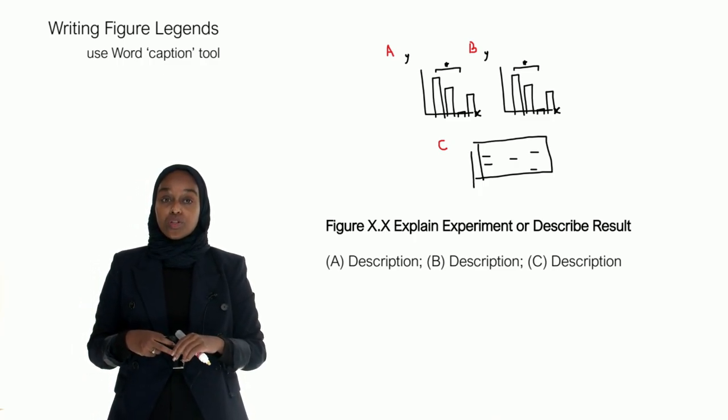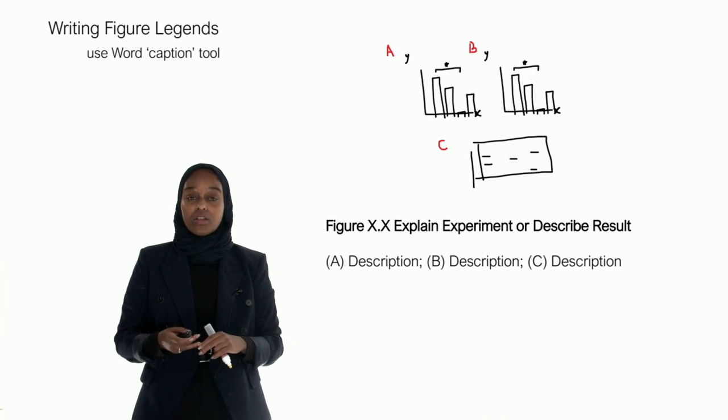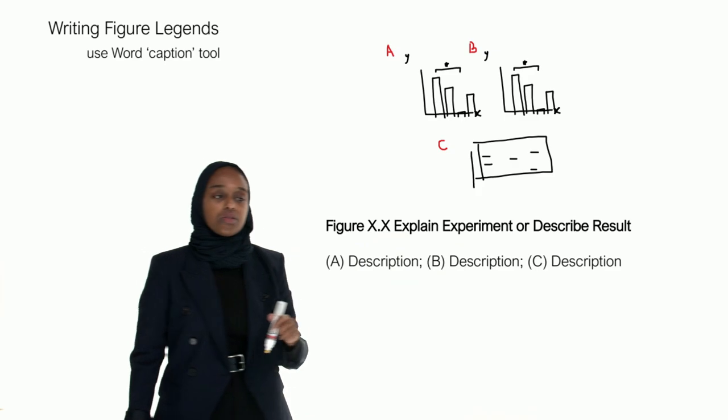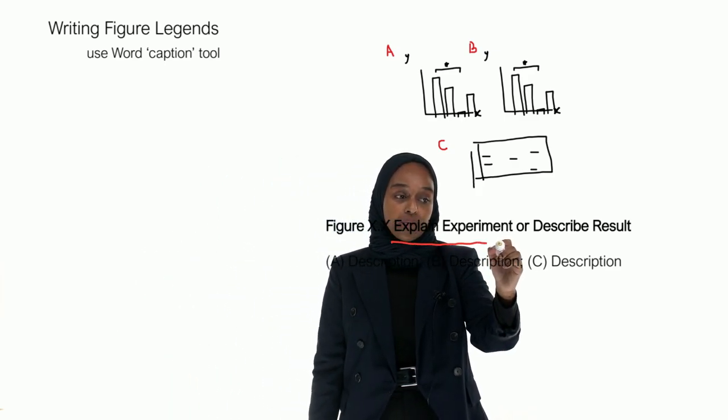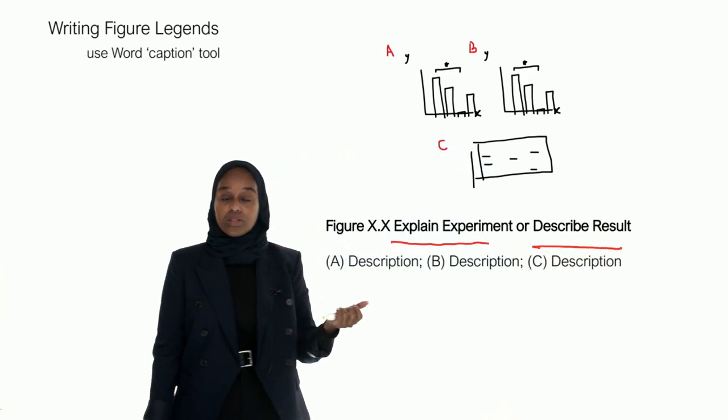And to write the figure legend, you want to use the caption tool and this was something that I went into a bit of detail in on the first lesson. Now the title, there's two options for the title. So option number one is to explain the experiment or option number two is to describe the results and I'll show you two examples in a second.